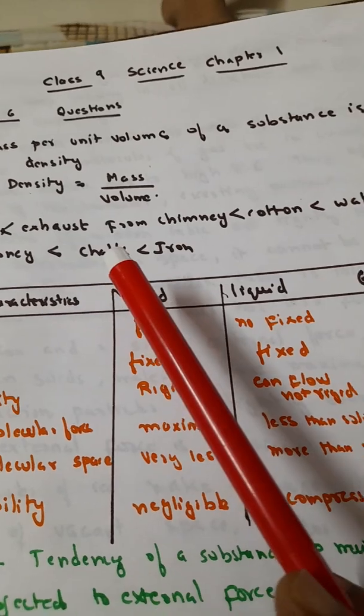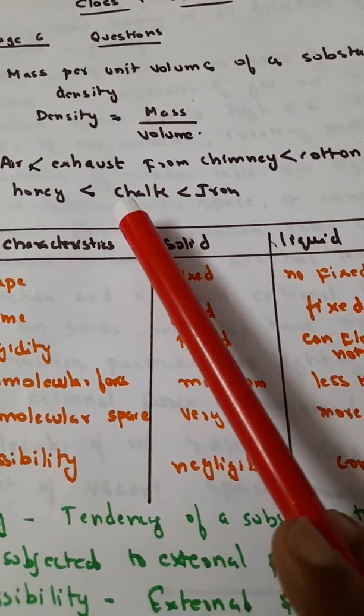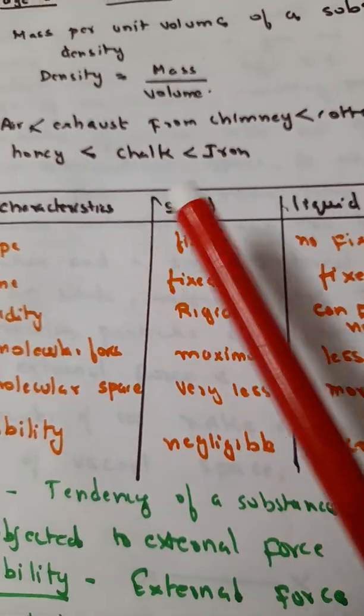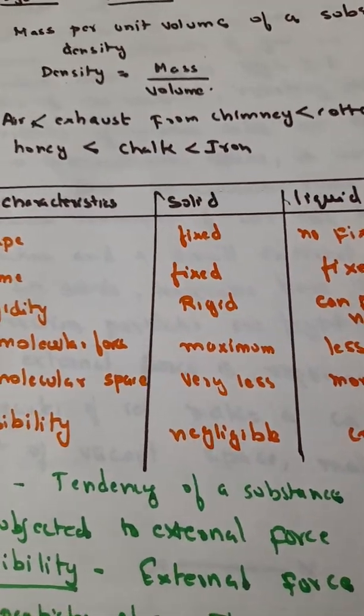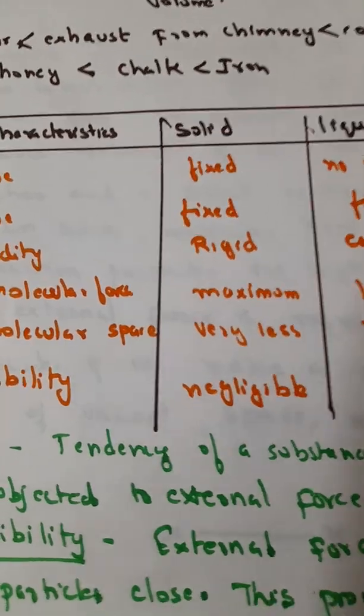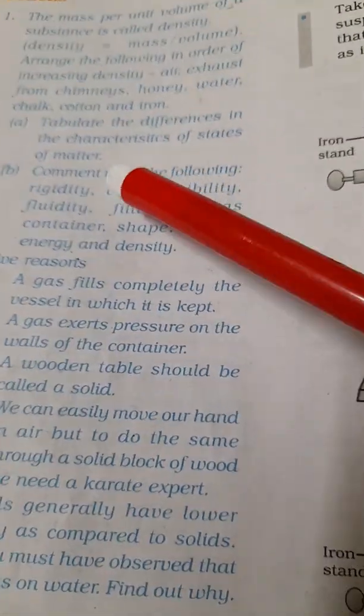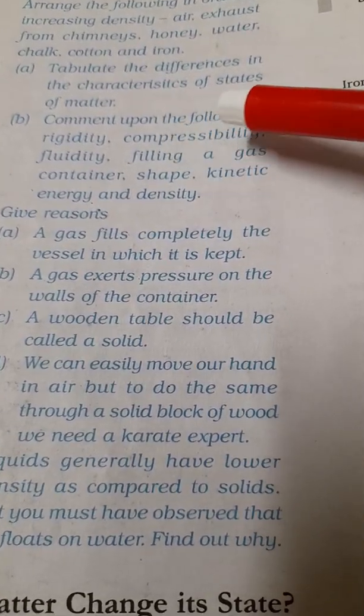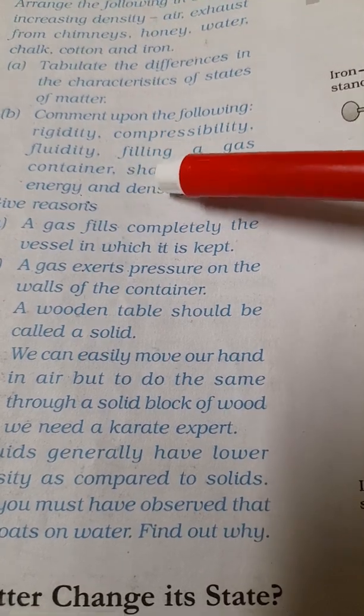So this will be the correct arrangement: air, exhaust from chimney, cotton, water, then honey, chalk, iron. So I hope you get this. Now we will move on to the next question.